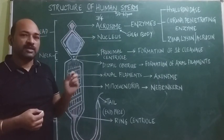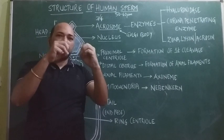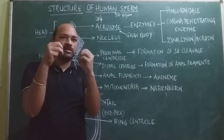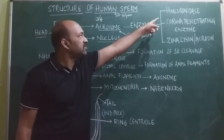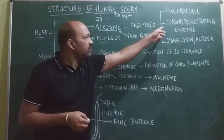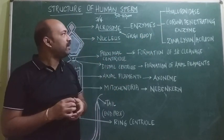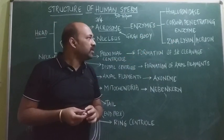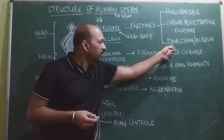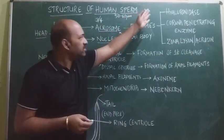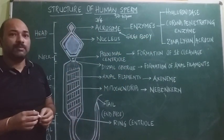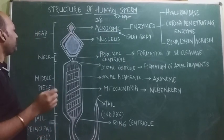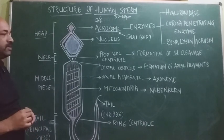Hyaluronidase is the enzyme which dissolves the hyaluronic acid present between the corona radiata cells, which normally fixes those cells permanently. Corona penetrating enzyme dissolves the corona radiata and facilitates the sperm to penetrate through it. The last enzyme is zona lysine or acrosin — 'zona' referring to zona pellucida and 'lysine' meaning breakdown. All three are collectively called sperm lysins, present in the acrosome, and help in sperm penetration.